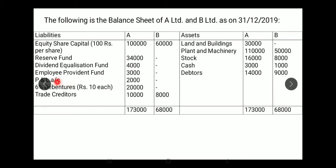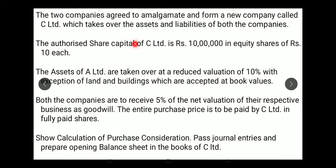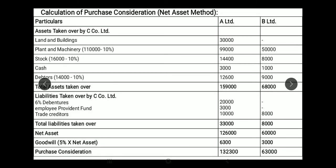Accumulated profits also belong to shareholders — owners of the company — so those are insiders' liabilities. Outsiders' liabilities are creditors, debenture holders, and employee provident fund. Employees are outsiders; they are not owners of the business and do not receive profits or shares. So employee provident fund is also an outsiders' liability. We subtract these three liabilities — all taken at book value since no revaluation is mentioned for liabilities.